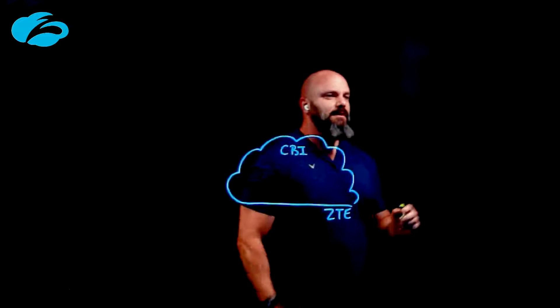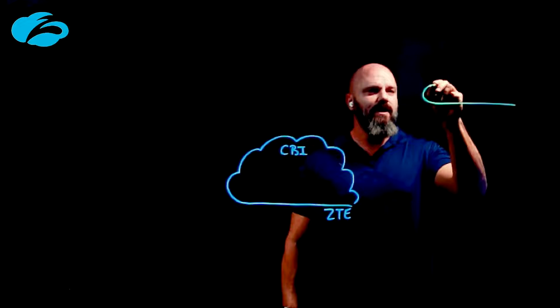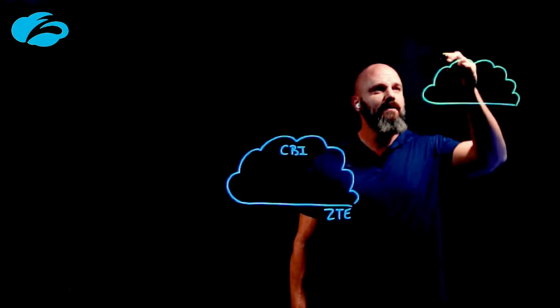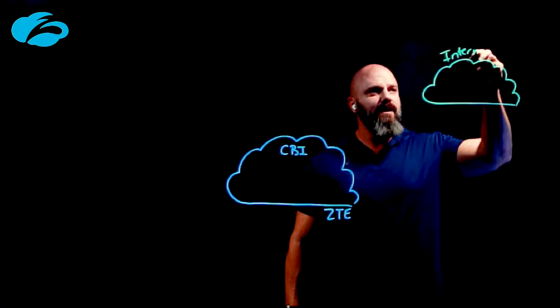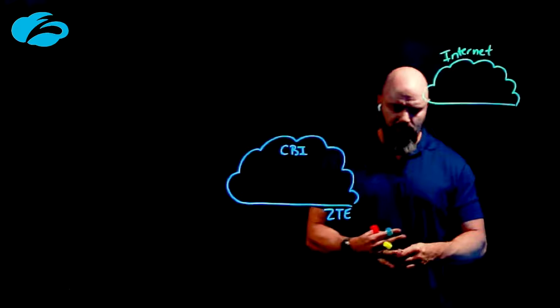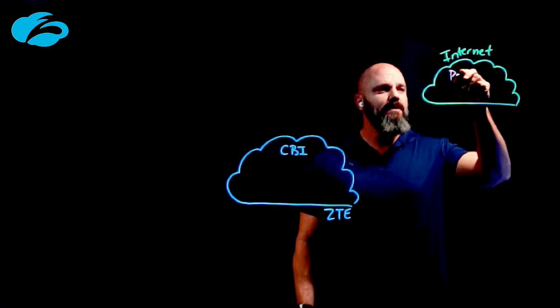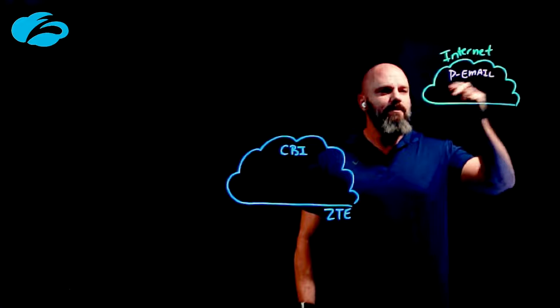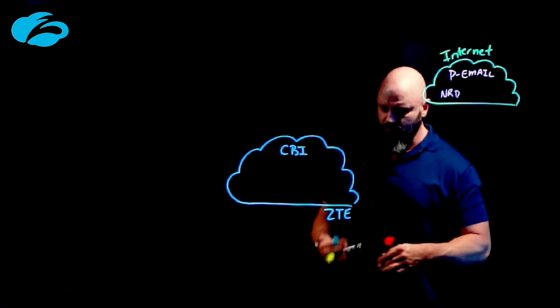When we think about browser isolation, historically, it's kind of simple. There's this thing called the internet. We want to be able to protect the internet. And maybe you want to isolate everything, and maybe you don't. Historically, what we have seen is stuff like personal email, maybe newly registered domains, or uncategorized websites.